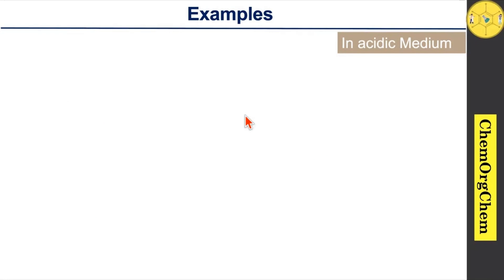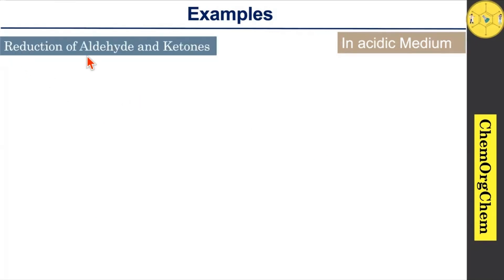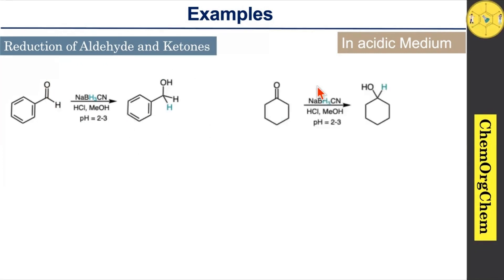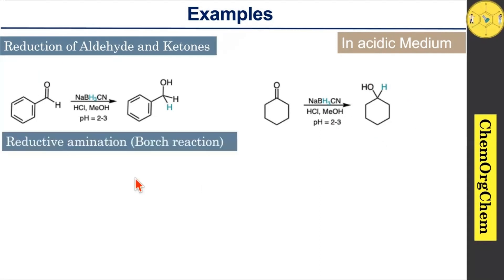First, we are going to see the reduction of aldehydes and ketones. When you use sodium cyanoborohydride with benzaldehyde in the presence of hydrochloric acid — where the pH level is 2 to 3 — it selectively reduces the carbonyl group into the corresponding alcohol. Here is another example: cyclohexanone, when subjected to these conditions, provides the corresponding alcohol product.